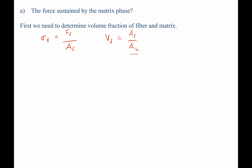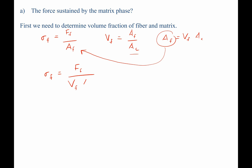That allows us to write the cross-sectional area of the fibers as equal to the volume fraction of the fibers multiplied by the cross-sectional area of the entire composite. Plugging that in, the stress on the fiber phase equals the force on the fiber phase divided by the volume fraction of the fibers times the cross-sectional area of the total composite. We know the stress, the force, and the cross-sectional area — the only unknown is the volume fraction of the fiber.